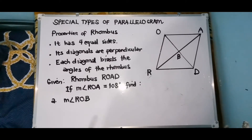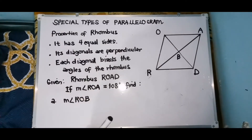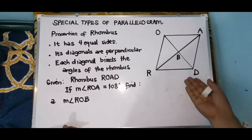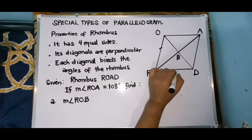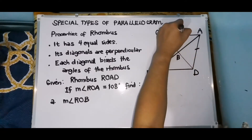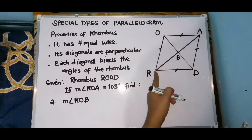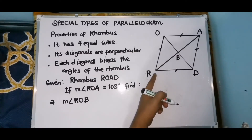So let's talk about the properties of rhombus. We have here three properties and these three properties are applicable for us to be able to solve problems regarding rhombus — measurement ng mga angles. The first one is it has four equal sides. So meron tayo ditong given na rhombus, at sa first property, all the sides are equal. So if the side OR is 3 meters, so itong OA, AD, at DR, lahat yan ay 3 meters.